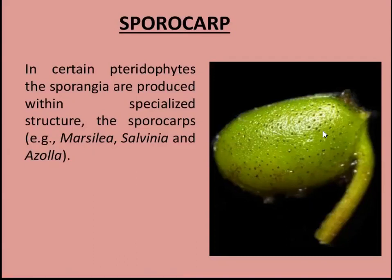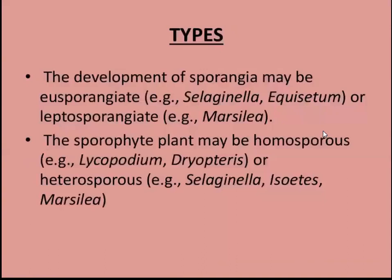Marcella, Salvinia, and Azola — these will be the best examples. So there are many types of sporangia: Eusporangia and Leptosporangia. Eusporangia is the Selaginella type, and Leptosporangia is the Marcella type.